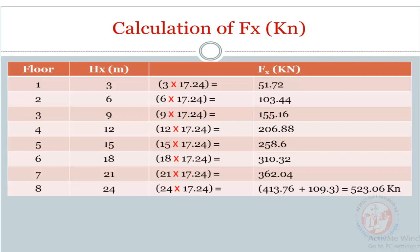The last column shows total force for each floor. First floor: 3 meters, 3 times 17.24 equals 51.72. Second floor: 6 meters, 6 times 17.24 equals 103.44. Third floor: 9 times 17.24 equals 155.16. Fourth floor: 12 times 17.24 equals 206.88. Fifth floor: 15 times 17.24 equals 258.6. Sixth floor: 18 times 17.24 equals 310.32. Seventh floor: 21 times 17.24 equals 362.04. Eighth floor: 24 meters, and this floor force is 413.76 plus Ft 109.3 equals 523.06 kilonewtons.